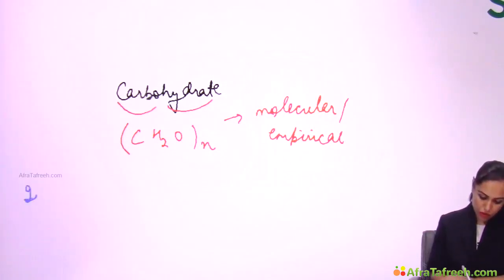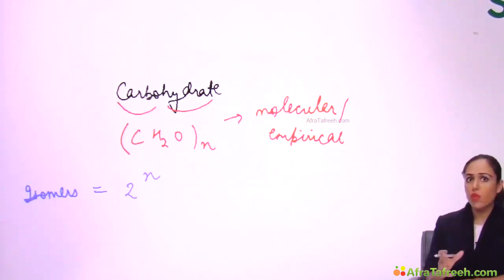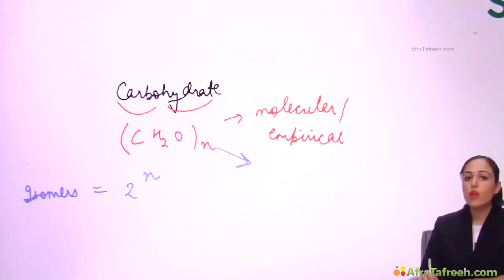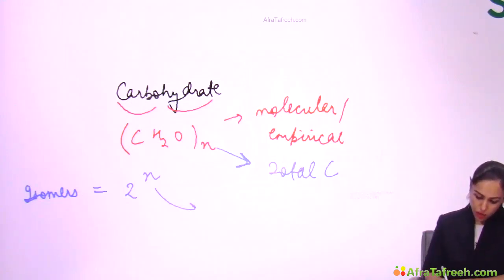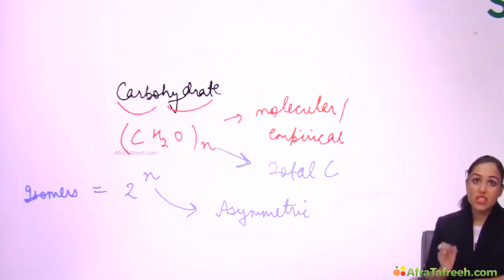Now there is one more formula in carbohydrates: the number of isomers. Number of isomers for a compound is given by the formula 2 to the power n. Be careful — in both these formulas n is written, but this n is not the same. In the molecular formula, n is the number of total carbons — like glucose C₆H₁₂O₆, take all the carbons. But in the isomers formula, n is the number of asymmetric carbons, also known as chiral carbons.